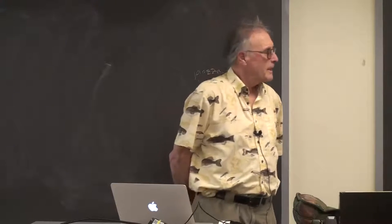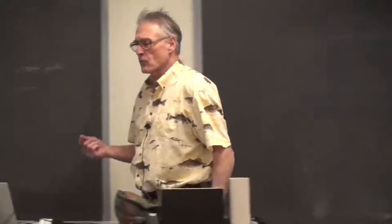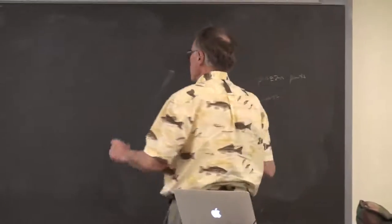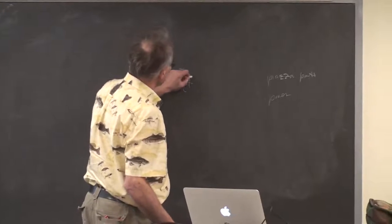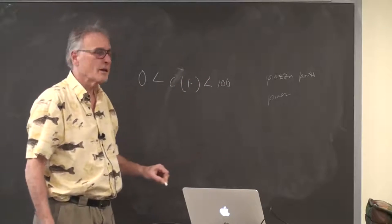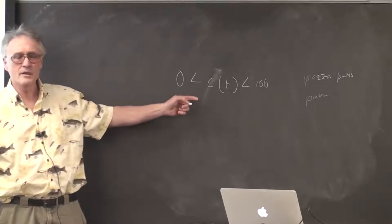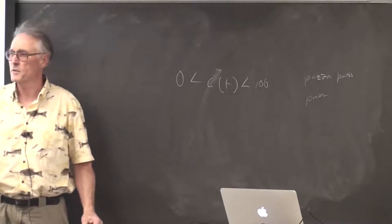Good morning. I saw a most interesting bug this morning. It took about an hour to figure out what it was. The symptom was that the motor had an effective control range for c(t) from 0 up to about 100 out of 40,000. The entire control range for c(t) was 0 to 100 instead of 0 to 40,000.